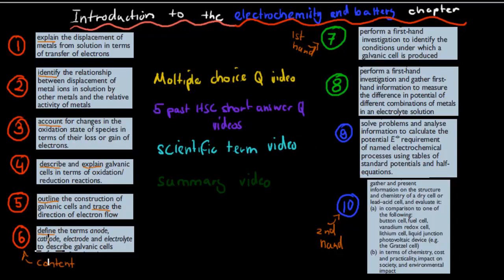We have define for number six and describe as well, to describe galvanic cells. Perform first investigation to identify conditions under which galvanic cells, just identify for the seven.